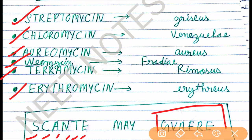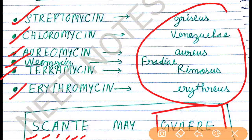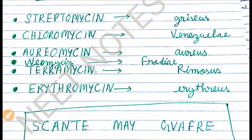Now let's see how you can remember the source of antibiotics using 'GAP FREE.' Please note that these are all species with a particular genus called Streptomyces. So before the name of any species, we use Streptomyces — for example, Streptomyces griseus, Streptomyces ramosus, and so on. This is the trick to remember antibiotics and their bacterial sources.